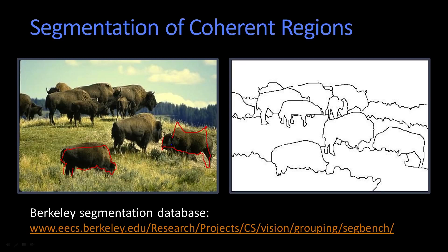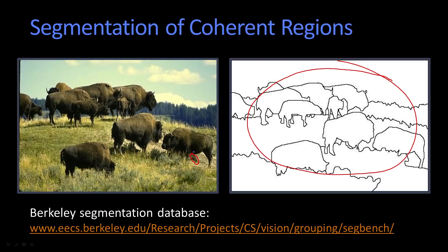The idea is that if I handed that picture off to anybody and said draw a border around the different objects, you would get something that looks kind of like that. People would segment, and the segmentations wouldn't all agree. Some people might separate out this little guy here from the grass, but you can see that this one doesn't. But in general, there'd be good agreement on where the different elements are.